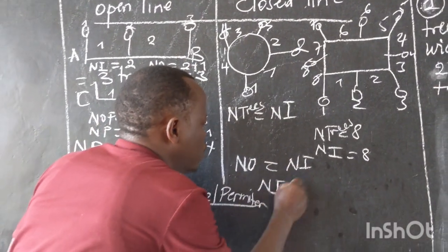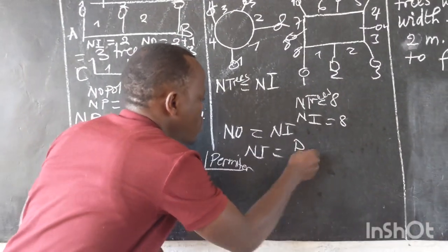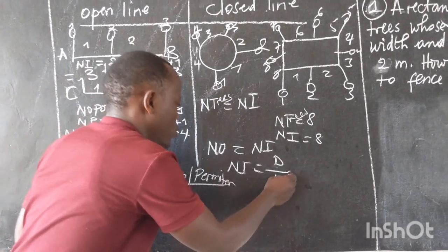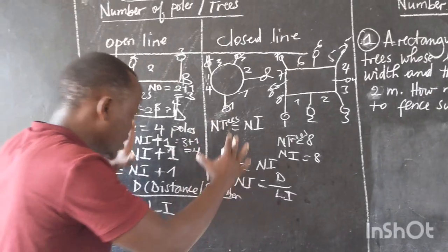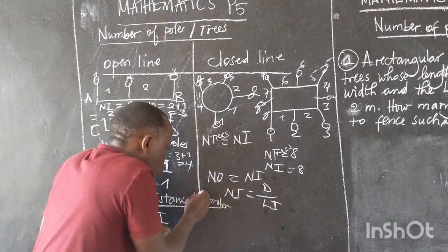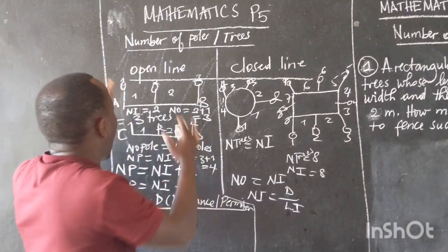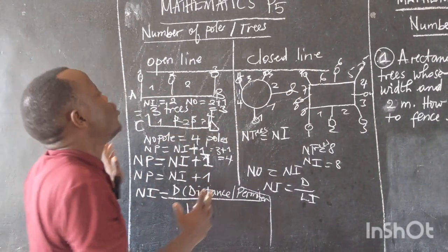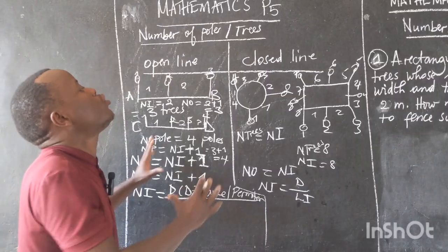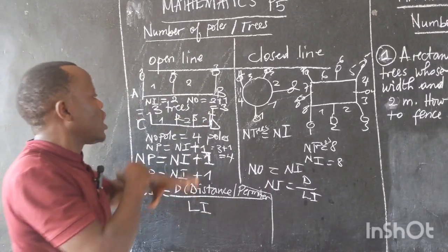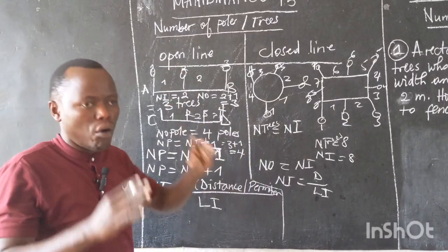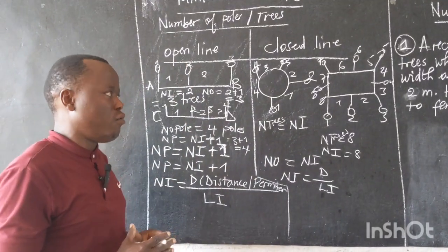Remember that the number of intervals is equal to distance over the range of intervals. So if you know these formulas and are able to apply them on an open line and on a closed line, you will be able to answer every question related to finding the number of objects or the number of poles.